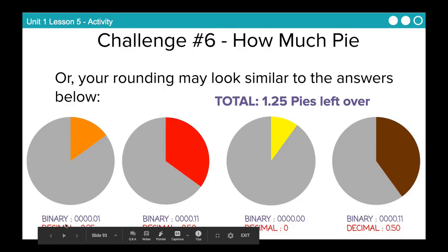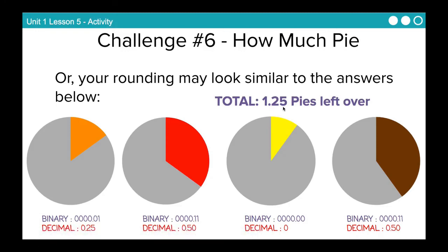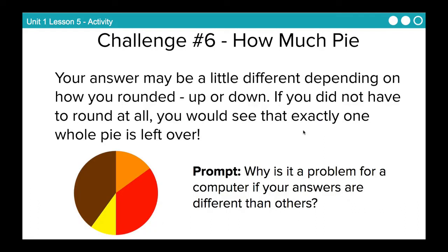So if you did everything on here and you added up your answers, you would have gotten 1.25. So that means that 1.25 pies are left over. Now, your answer may be a little different depending on how you round it up or down. If you didn't have to round at all, in a perfect world where we didn't have to round at all, we could represent 0.33 and 0.17. If you did not have to round at all, you would see that exactly one whole pie is left over. So not 1.25 like on the previous slide, but one pie.